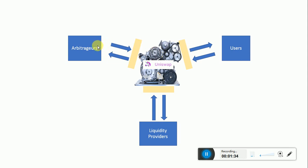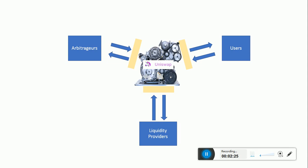There are arbitrageurs that essentially realign the price of Uniswap with the external market. For example, if the price in the external market drops — let's say of Maker — they're going to buy in the external market and sell it to Uniswap, realigning the price inside Uniswap to the external price. Essentially what they're doing is the same as users, just making swaps with the logic of arbitrage. And then there is the liquidity provider. Liquidity providers invest and provide liquidity for the exchange to operate. You put in Ethereum and a token, and by doing that, you enable the exchange to happen.